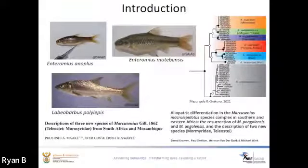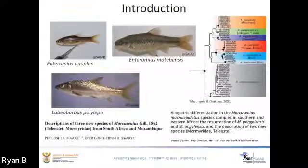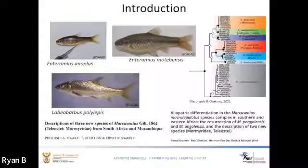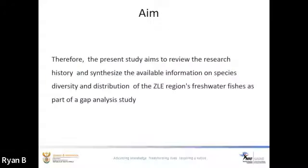It is likely the reason why a number of the ZLE fish fauna are listed as least concerned and widely distributed. However, genetic and morphological studies are showing that many species previously considered to have wide distribution ranges are instead species complexes, often comprising several narrowly ranged lineages or candidate species. Therefore, the present study aims to review the research history and synthesize the available information on species diversity and distribution of the ZLE freshwater fishes as part of a gap analysis study.